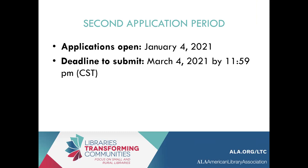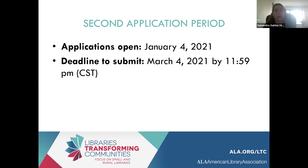If someone applies in the first wave and does not get selected, do they need to reapply for the second wave or are they automatically moved to the second wave? If you apply in the first wave and are not selected, we suggest you contact publicprograms@ala.org to request peer reviewer feedback on your application. That will give you an idea of the strengths and weaknesses of your proposal. You will need to resubmit — no one will be automatically rolled over. It will be a conscious effort on the part of the library to edit and resubmit.